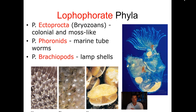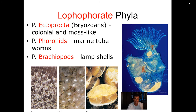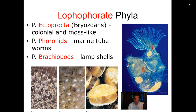The lophophore is a specialized group of tentacles used for feeding. The Ectoprocta are also called bryozoans — they're colonial and grow kind of like moss. The Phoronids are marine tube worms that also have the lophophore structure. The last of the three are the Brachiopods, also called lamp shells. They look very much like a clam, but they have these unique feeding tentacles, which is what distinguishes them.